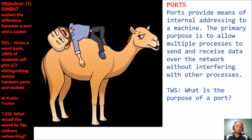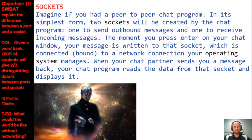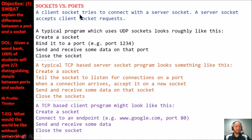What is the purpose of a port? Now let's bring it back to sockets. Imagine a peer-to-peer chat program — in its simplest form, two sockets are created: one to send outbound messages and one to receive incoming messages. The moment you press enter, your message is written to that socket, which is connected to a network connection your operating system manages. When your chat partner sends a message back, your chat program reads the data from that socket and displays it to you.